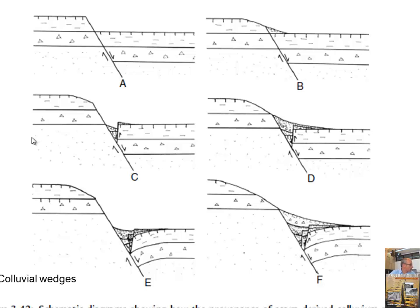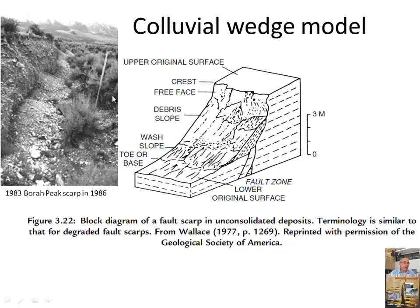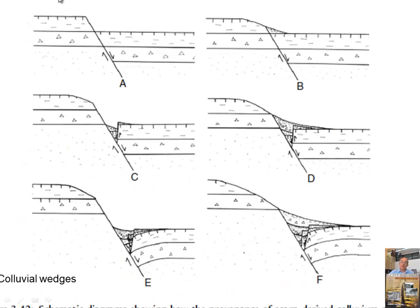Is it possible to see liquefaction on the colluvial wedge? Usually the colluvial wedges are pretty coarse-grained, so they're not as susceptible to liquefaction as more fine-grained and hydrated material. Also, the wedge is forming right after the earthquake — the liquefaction is driven by the earthquake itself. There's no wedge at the time of the earthquake unless it's the prior wedge. Once the prior wedge is formed and the next earthquake occurs, you could liquefy the older wedge, but usually it's pretty consolidated by then.